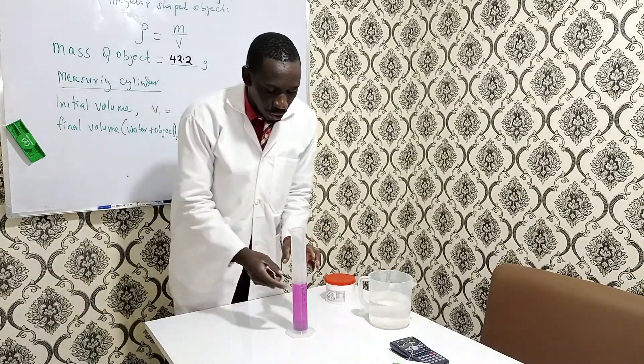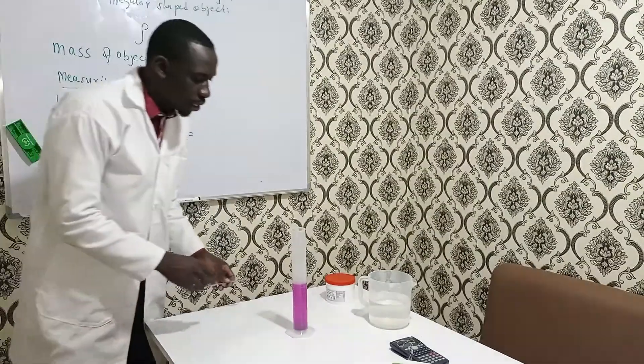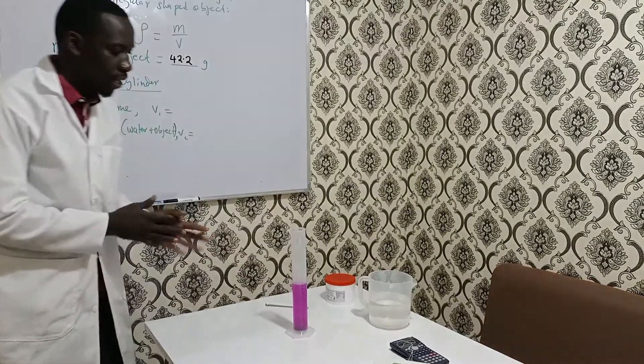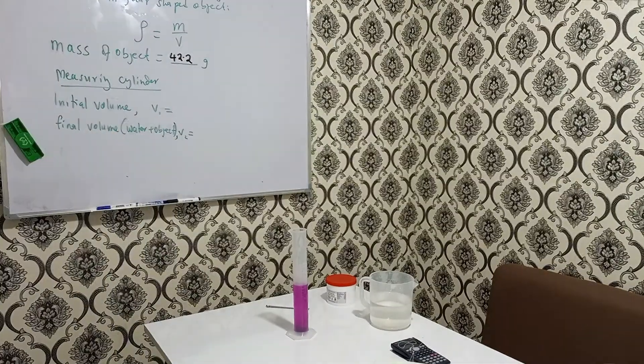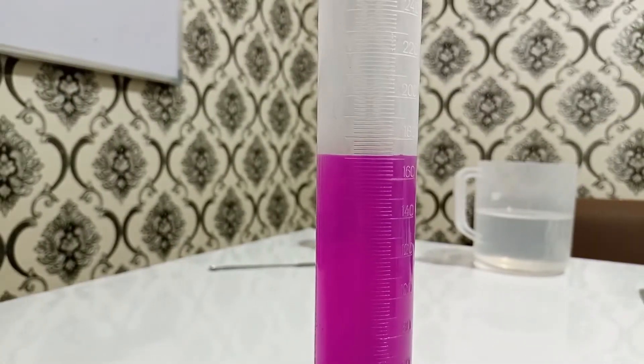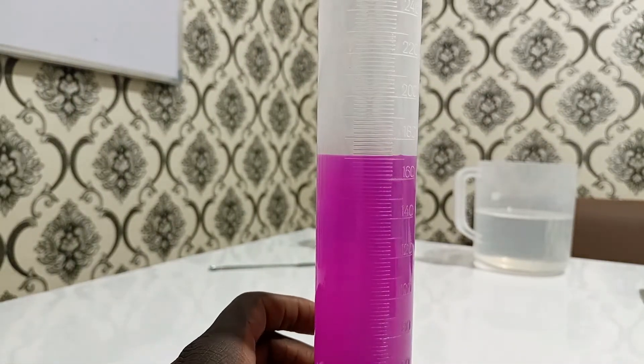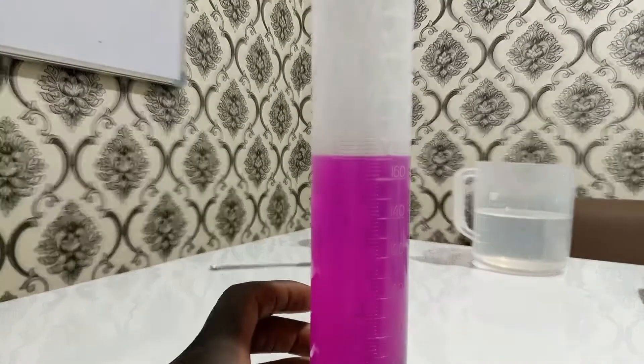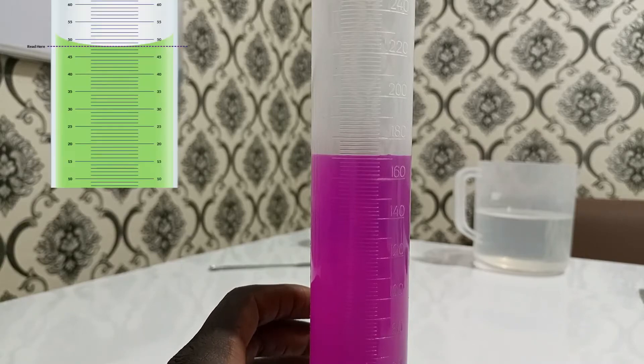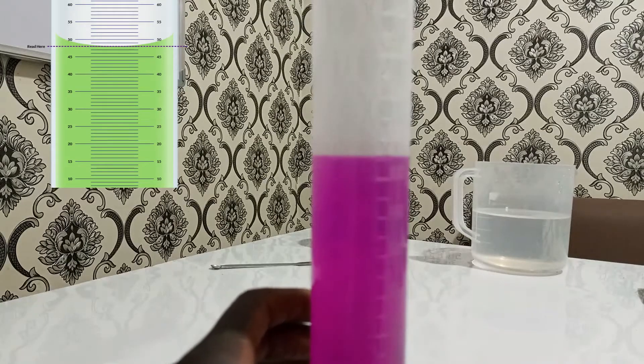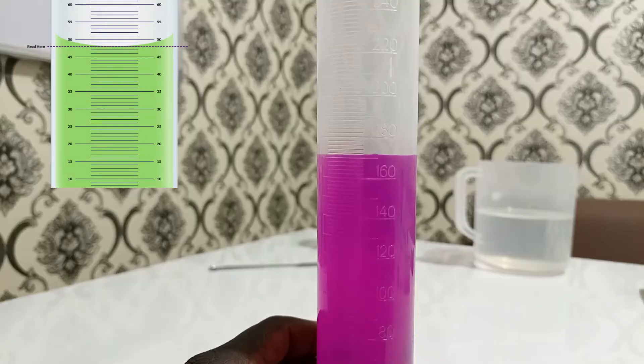Now, the next thing is to record. So, we need to find what is the volume of this water before any measurement is taken. You can see clearly. The initial volume of water is 170. Remember, we are supposed to take the measurement below the meniscus. There is 170 cubic centimeter.